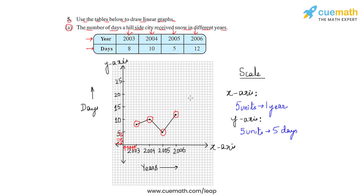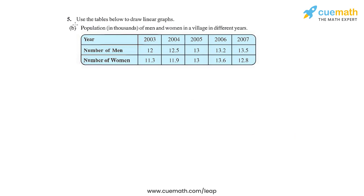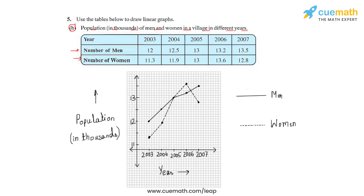Let us bring the next table onto the canvas and see how we can draw the line graph again. In part B of this question, we have been given the population in thousands of men and women in a village in different years. The values are given in the table, and here we have taken the years on the x-axis and the population in thousands on the y-axis.